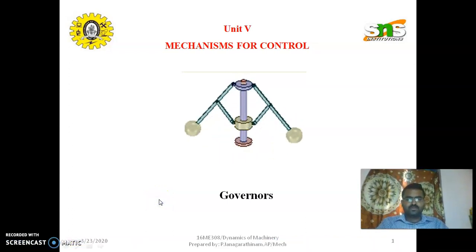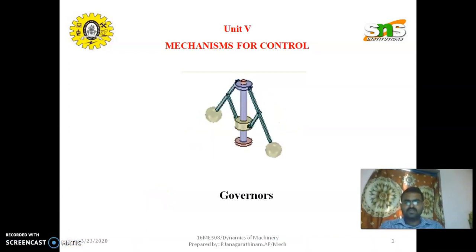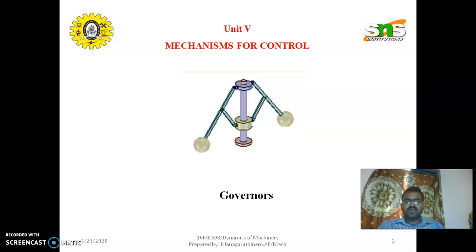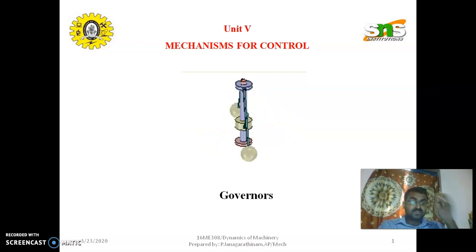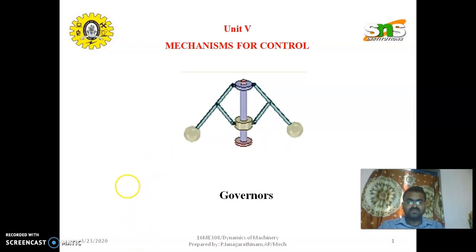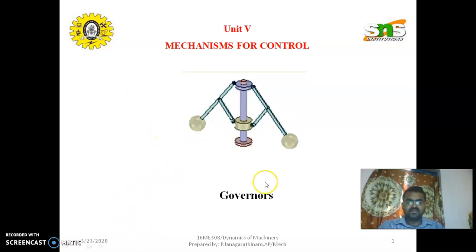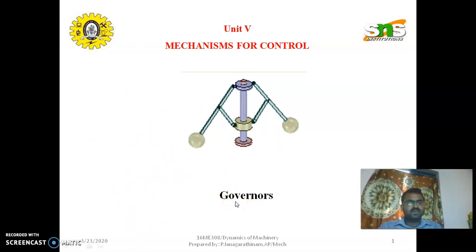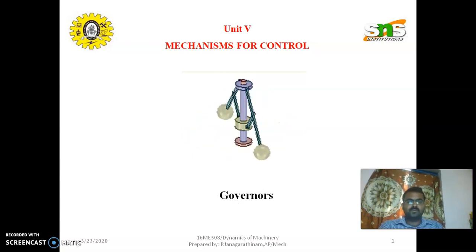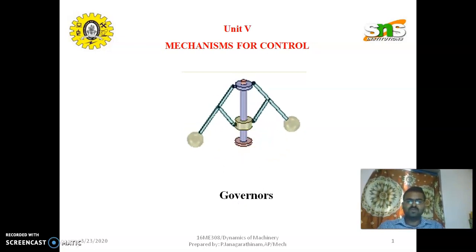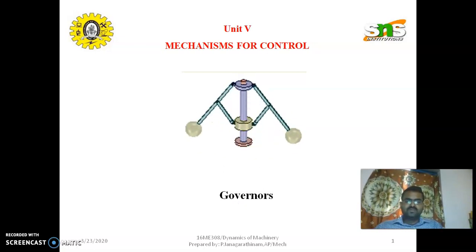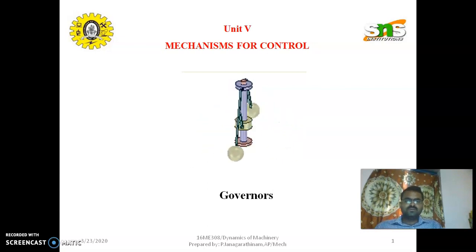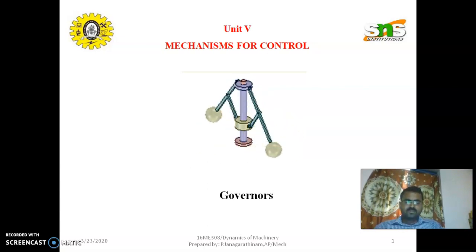Good morning students. Today we are going to discuss the topic mechanisms for control, 5th unit. The 5th unit consists of two topics: one is governor and another one is gyroscopic couple. The gyroscopic couple problems are uploaded in SNS post. Today we are going to discuss 2-3 problems on governors.